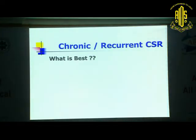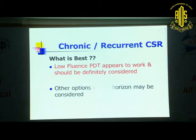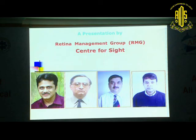This chart depicts pre and post vision in these patients. The message is: for chronic or recurrent CSR, the best treatment — apart from trying those many drugs I described — is low-fluence PDT. It works and should definitely be considered where you cannot do photo-fermentation with laser. Other options on the horizon can be considered, but the wealth of evidence is in favour of low-fluence PDT. Thank you very much for your kind attention.